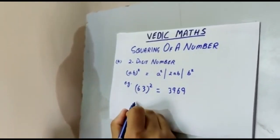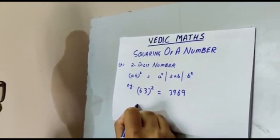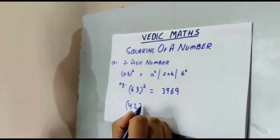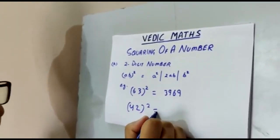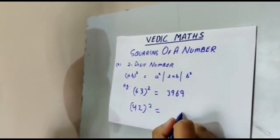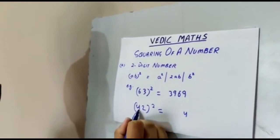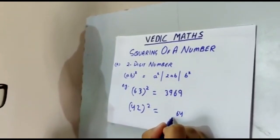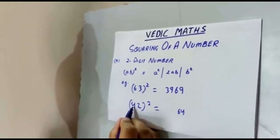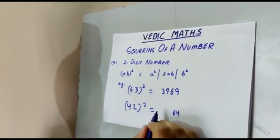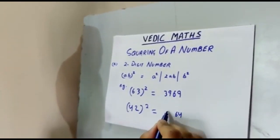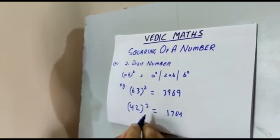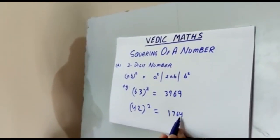Now let us take another example, 42 square. First we do 2 square which is 4. Then we do 4 into 2 into 2 which is 16. We take 1 as a carry. Then we do 4 square which is 16 plus 1 which is 17. This is the square which is 1764.